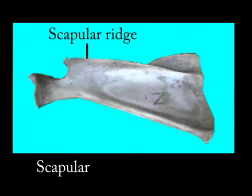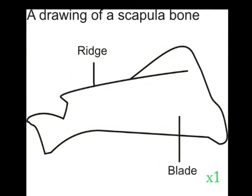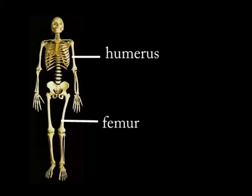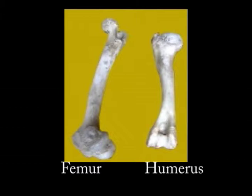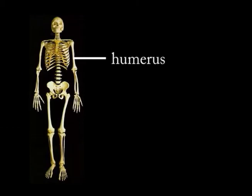Then the shapes of common bones. A scapula — here we have a scapula ridge and a scapula blade. A drawing of the scapula should label the scapula ridge and scapula blade, then put a magnification. Then the femur and humerus — these are almost similar bones. The femur is found in the thigh; the humerus is found in the arm.